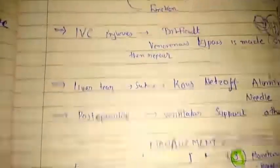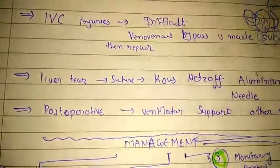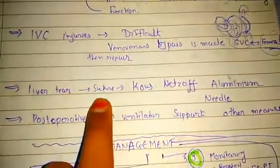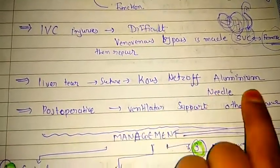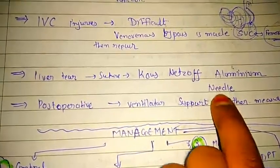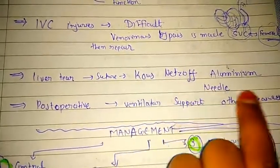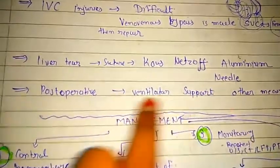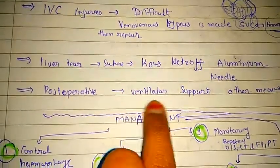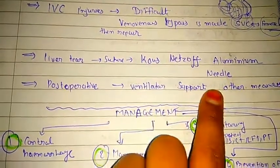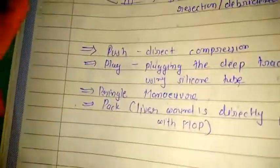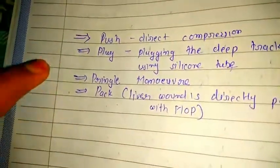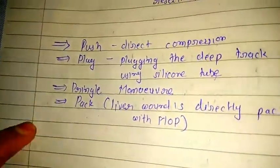If liver tear is present, suture of the liver is done with coarse chromic catgut or aluminium needle. Post-operative management includes ventilator support and other measures. In summary: push, plug, Pringle manoeuvre, and pack.